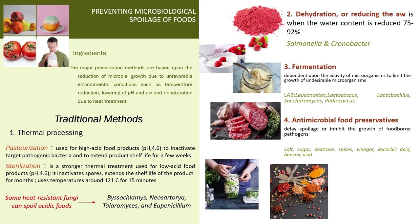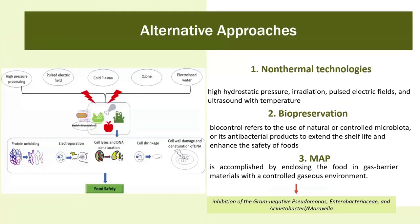The main alternative approaches to prevent microbiological spoilage of food include: (1) non-thermal processing technologies, (2) biopreservation, (3) modified atmosphere packaging (MAP), (4) antimicrobial packaging, and (5) hurdle technology.